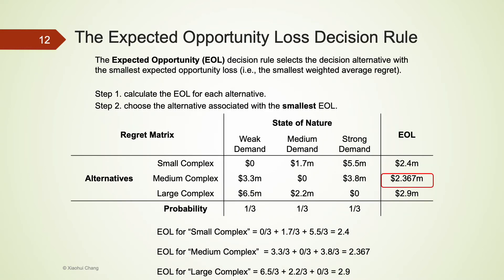The expected opportunity loss, or EOL decision rule, is similar to the EMV decision rule but is based on the regret matrix. We calculate the weighted average regret for each alternative, and then choose the alternative with the lowest EOL — that is, the alternative with the smallest expected opportunity loss. In our example, the company expects the least amount of opportunity loss if it builds a medium complex.